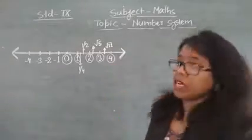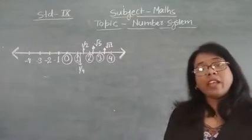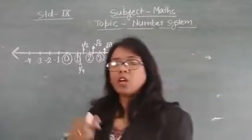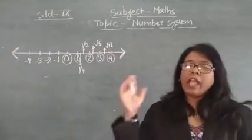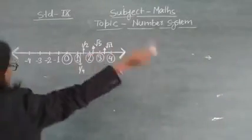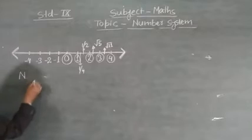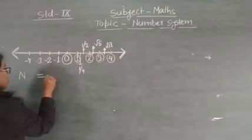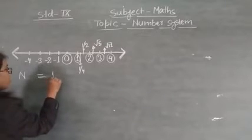The host tells that Nitin has picked all natural numbers. He explains that natural numbers start with 1 and go to infinity in the positive direction. Natural number is represented as N.